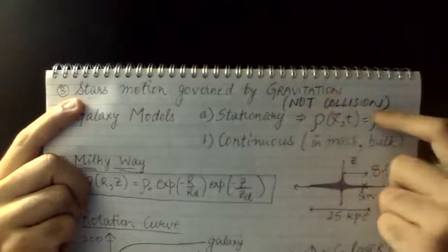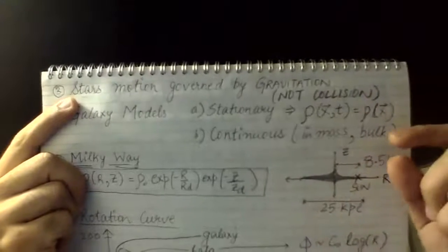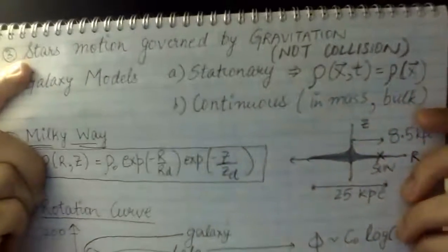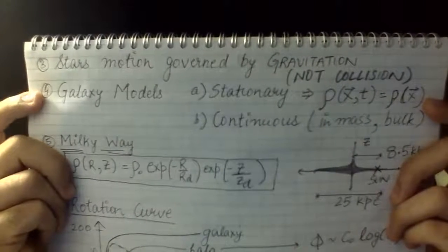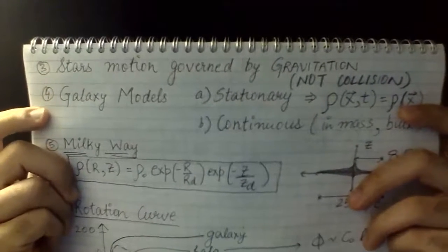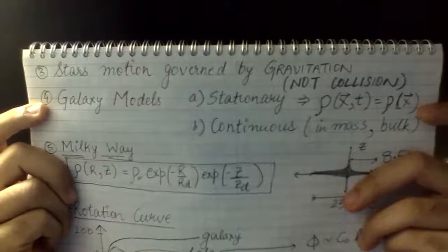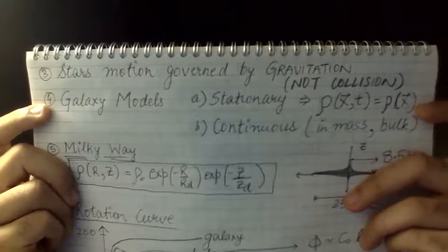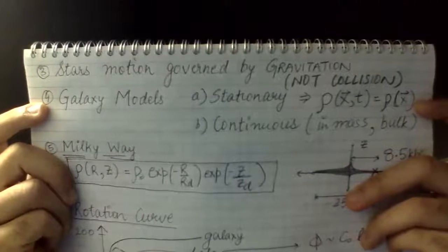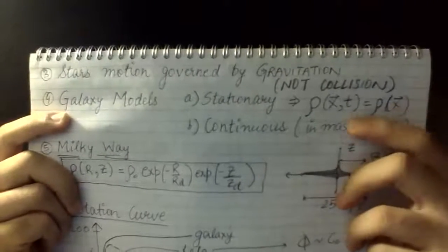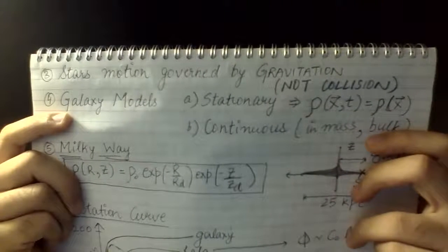Since stellar collisions are negligible, star motion is totally governed by gravitation, not collisions. Every star pulls every other star with a gravitational force, and that is how the overall potential of the galaxy develops. In our lectures we'll also be talking about various galaxy models — spherical, cylindrical, and more complex ones.